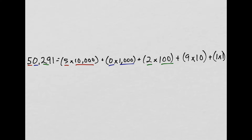And I'm adding each of these together, because if I add these all up, I'll get back to my original number. We had 9 tens, so I have 9 times 10. And lastly, I had 1 one, so 1 times 1.